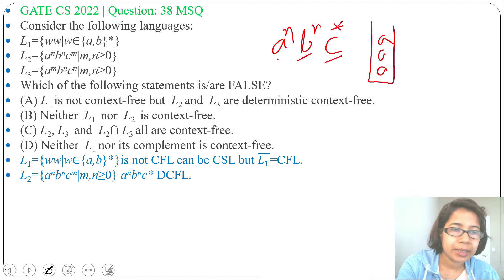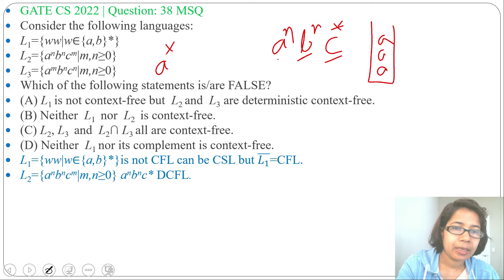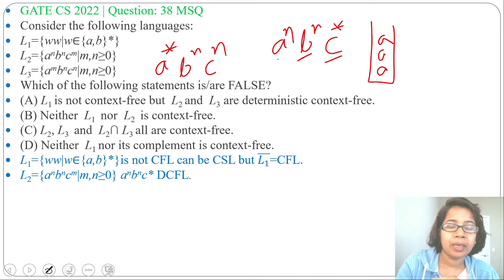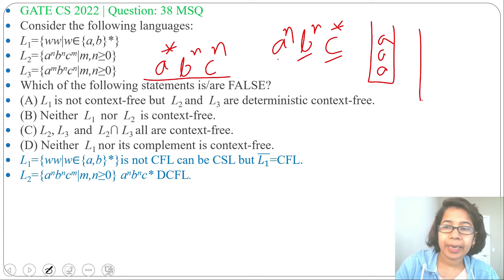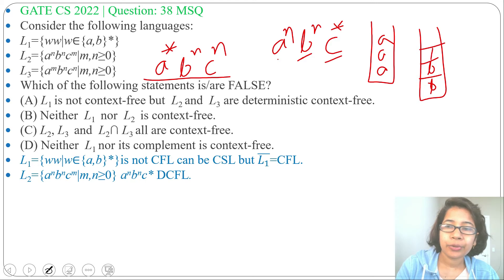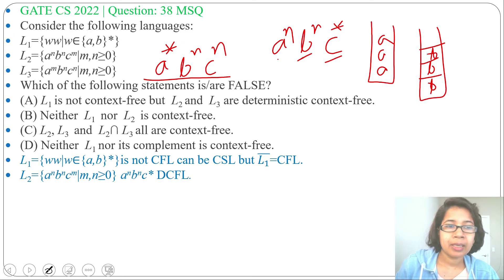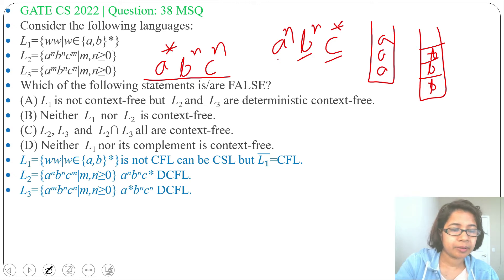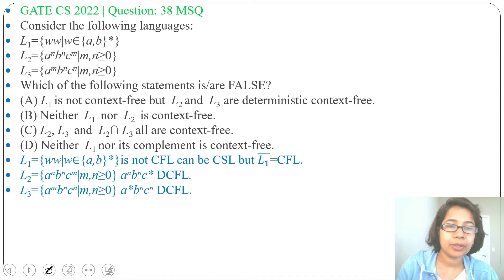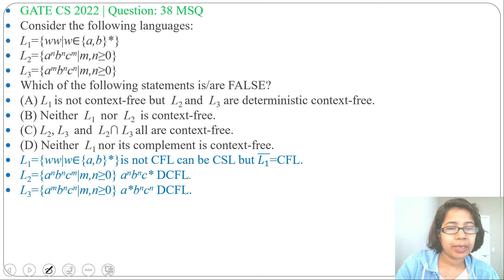Next, L3: a^m b^n c^n, with m, n ≥ 0. This we can write as a* followed by b^n c^n — any number of A's followed by equal numbers of B's and C's. We can execute this on a stack: for A's we simply skip, then for B's we push, and for C's we pop B's. So we can compare the count of B's with the count of C's. This is a context-free language — in fact it is a deterministic context-free language (DCFL).